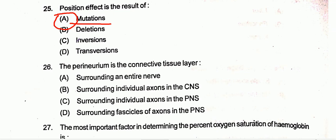Question twenty-six: the perineurium is the connective tissue layer which surrounds the entire nerve. So the entire nerve is surrounded by the perineurium, and option A will be the correct one.